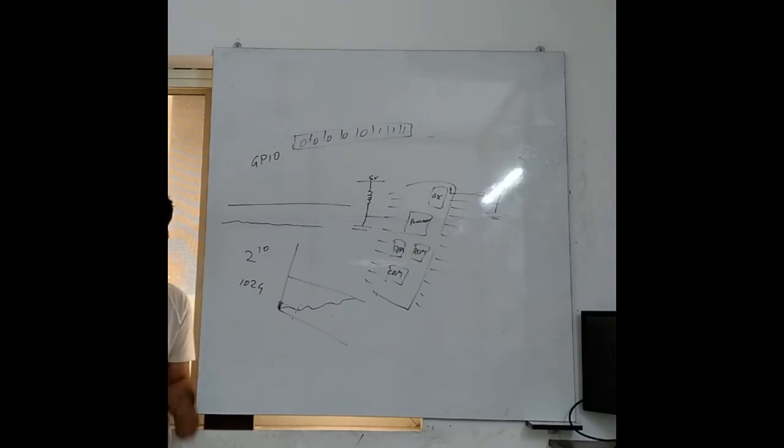Now if you have 12 bit ADC it goes 2 to the power 12. That is 4096 steps. Now 5 volts is divided in so many steps. In 12 bit ADC it will be divided into 4096 steps. So you are getting higher resolution.